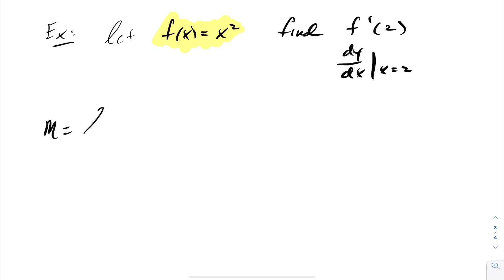The slope at that value is the limit as x approaches a of f(x) minus f(a) over x minus a. Since we're taking the limit at 2, I can change these a's to 2's. That's the limit as x goes to 2 of x squared minus 2 squared over x minus 2.